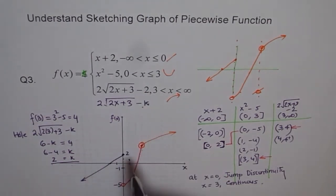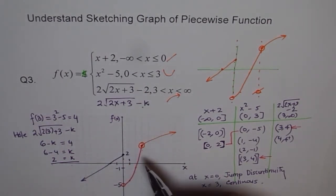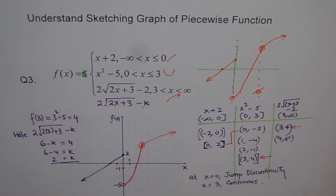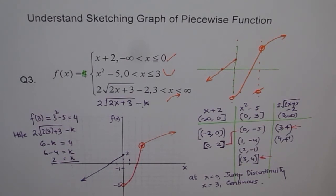We took k equals 2 and we saw it worked. That could be another variation of the same problem — the same question can be asked in many different ways. I hope you understand the concept. With this, you should be an expert in piecewise functions. If you like it, put your comments, and do well. All the best, thanks.